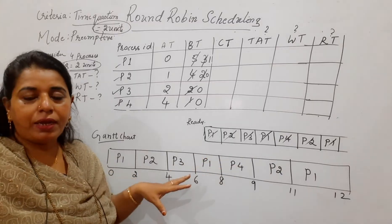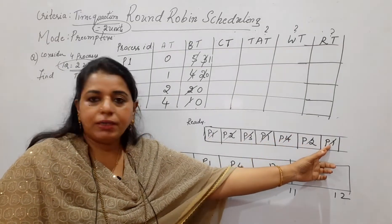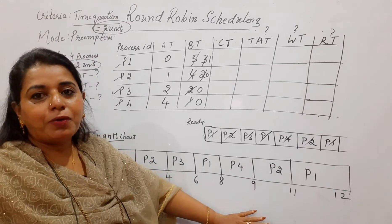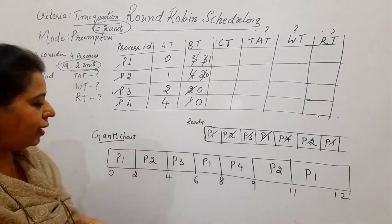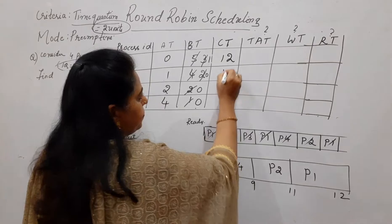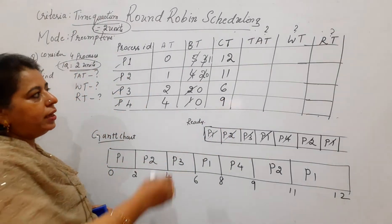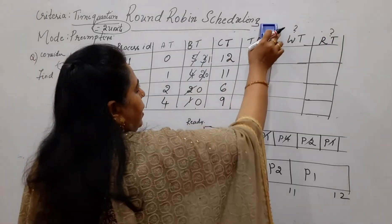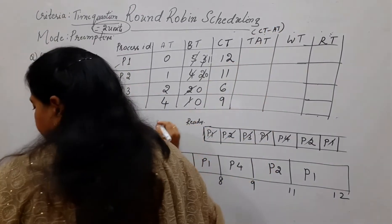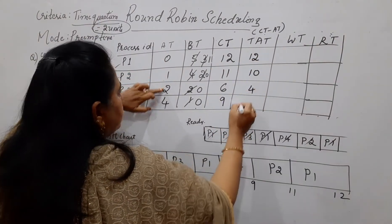This process of scheduling is called round robin — processes come and get time in a circular fashion. Once done with the running queue, filling the completion times is straightforward: P1 completed at 12, P2 at 11, P3 at 6, P4 at 9. Turnaround time equals completion time minus arrival time: P1 = 12 − 0 = 12, P2 = 11 − 1 = 10, P3 = 6 − 2 = 4, P4 = 9 − 4 = 5.